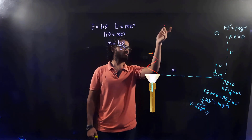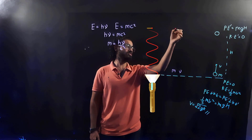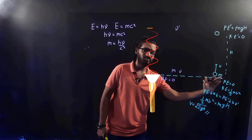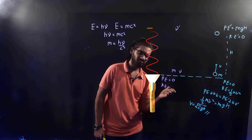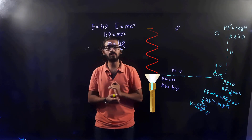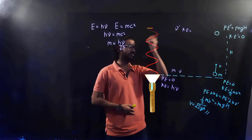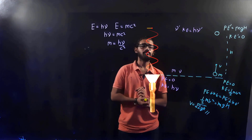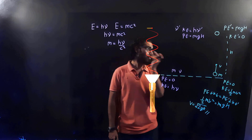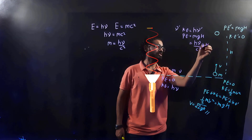This photon is moving upward. Let the frequency at the ground be μ and the frequency at height H be μ'. At the ground, potential energy is zero (reference line) and the kinetic energy — the energy due to frequency — is hμ. As the photon overcomes gravitational force, its potential energy increases and its frequency decreases. The energy at height H is hμ', and the potential energy is mgH, where m is substituted as hμ/c². So the potential energy becomes (hμ/c²)gH.